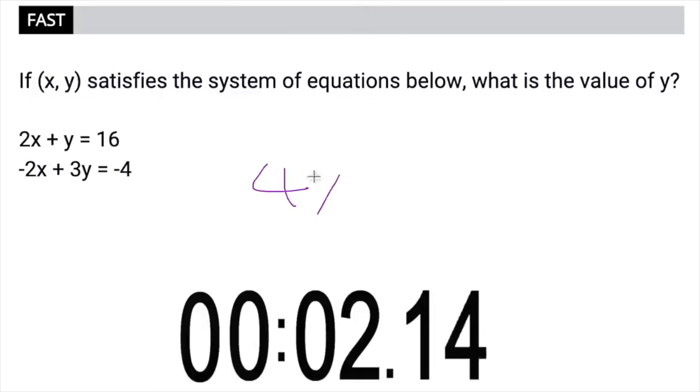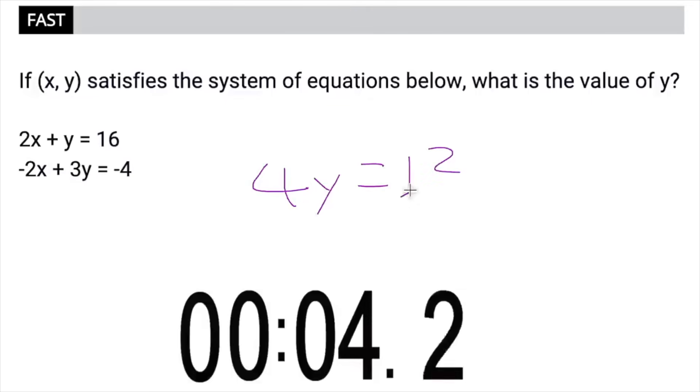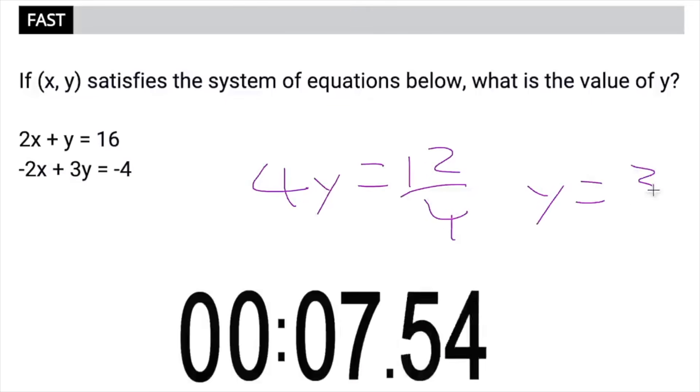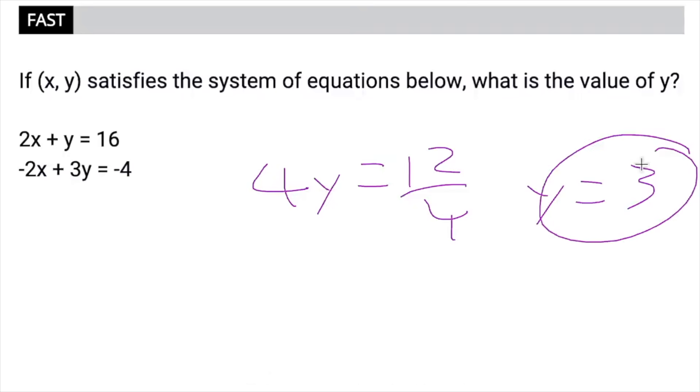All right. Boom, okay. Y equals three. So how did I solve that so quickly? Well, we've got a system of equations, and a lot of the time I'll recommend throwing these guys into Desmos, but I noticed that we have 2x and negative 2x.